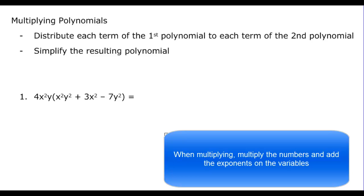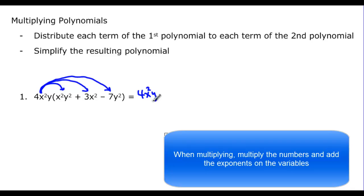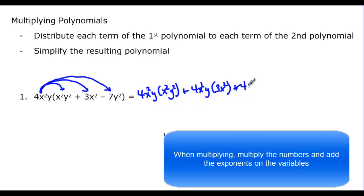What happens with bigger polynomials? We distribute each term in the first polynomial to every term in the next polynomial. Here I have a monomial 4x squared y being distributed. So 4x squared y times x squared y squared is the first term, plus 4x squared y times 3x squared is the second, and plus 4x squared y times negative 7y squared is the third.